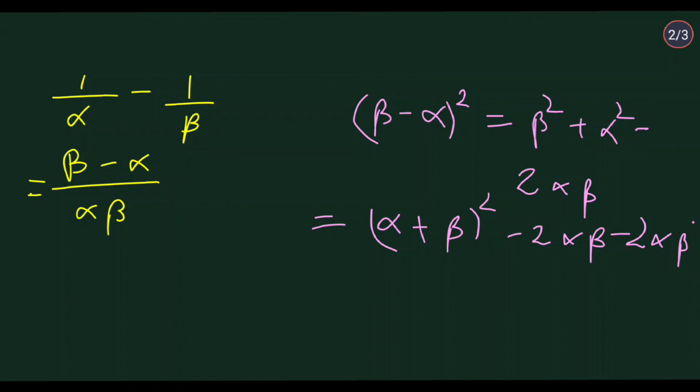This equals alpha plus beta whole square minus 2 alpha beta minus 2 alpha beta. If we solve this, we can write minus 4 alpha beta. So in place of this, we write minus 4 alpha beta. Now we have this expression, but is this the value of beta minus alpha? No, this is the value of beta minus alpha whole square, so don't forget that you squared it.